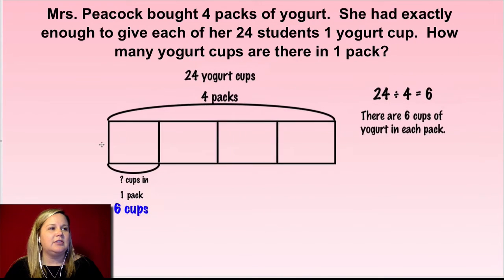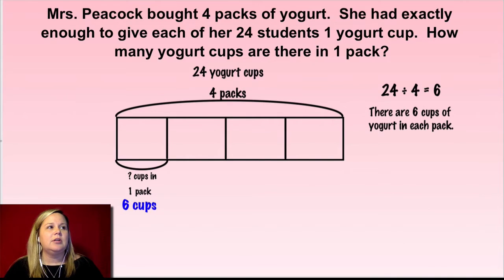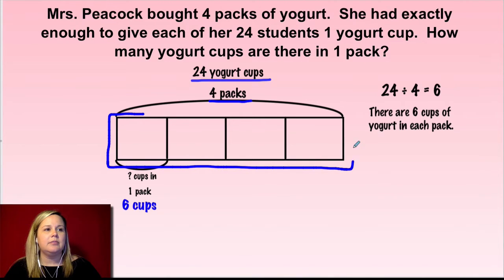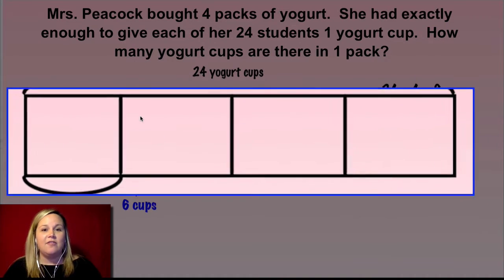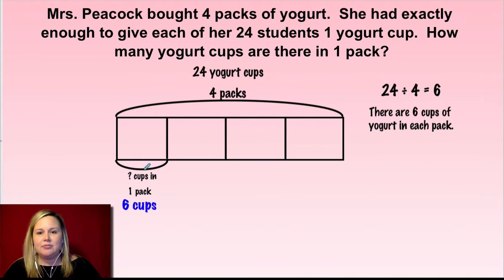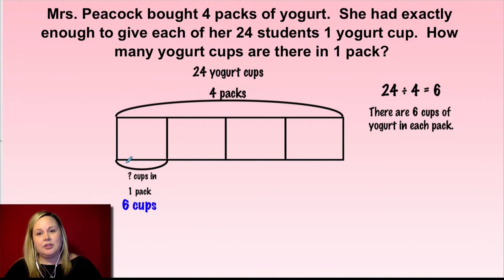All right friends, this is how I solved this problem. So let's take note of some things here. First I wanted to talk about how there are 24 total yogurt cups. Then I talked about how there were four packs, so that made me draw four equal groups, because I'm splitting this into four equal groups. Then I labeled this one unit as the number of cups in one pack. Until I worked through this problem with my tape diagram, I didn't know, so that's why I had a question mark.